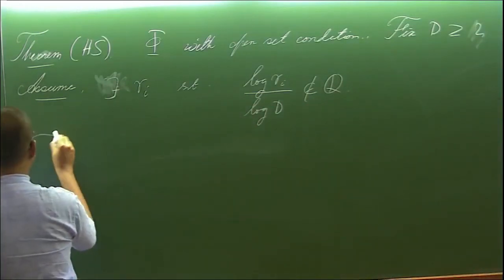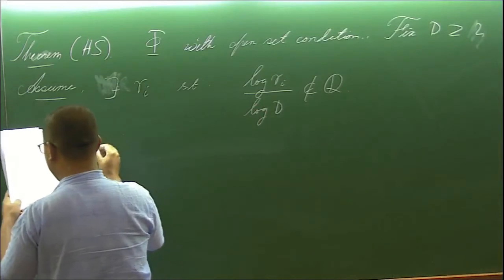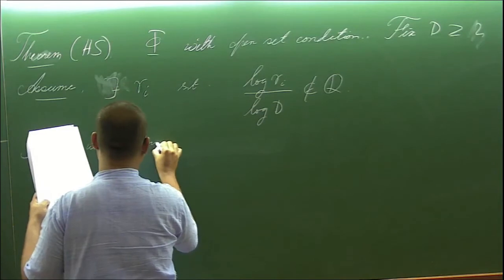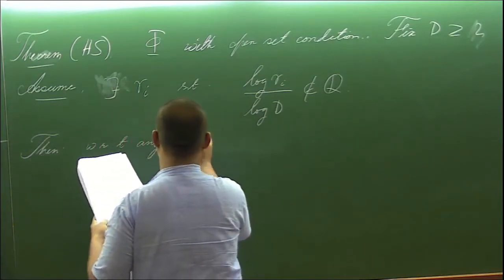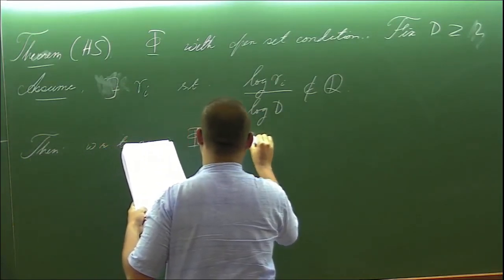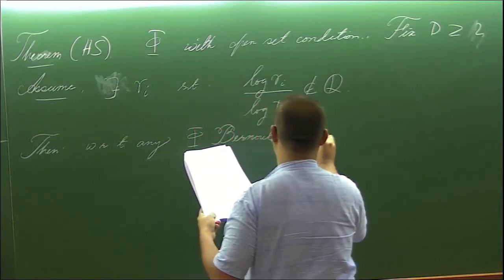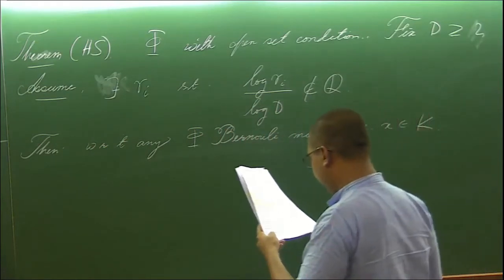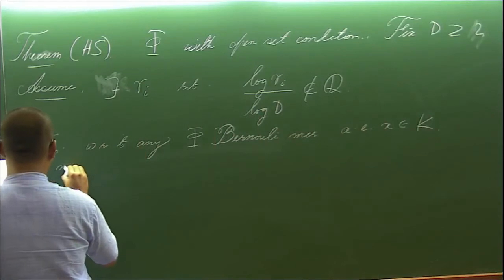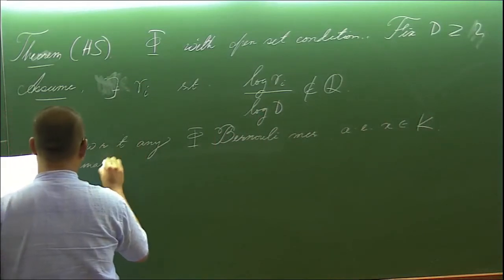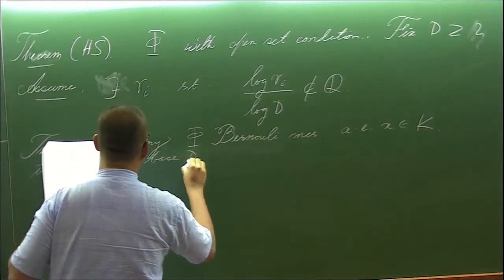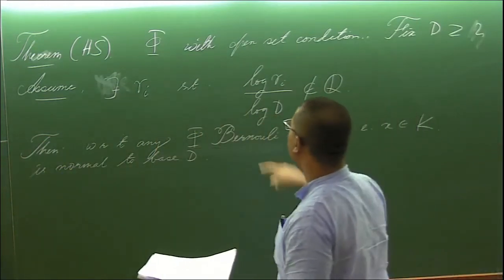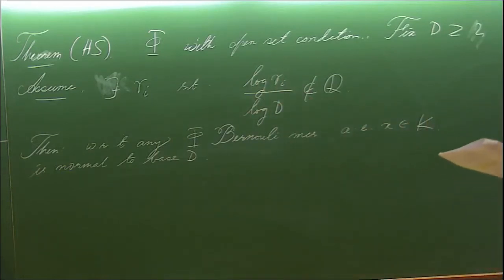I have a similarity IFS with some open set condition. Suppose my similarity IFS has this condition and assume, fix d. Assume that there exists some Ri which is not dependent on d, that is in the sense that log of Ri divided by log of d does not belong to Q. In other words, d is not allowed to be the rational power of all the contraction ratios. In that case, then with respect to any Bernoulli measure, almost every x in K is normal to base d.